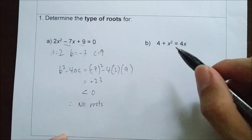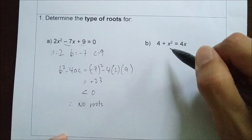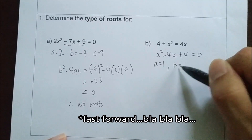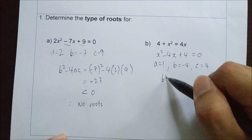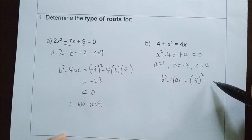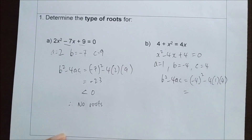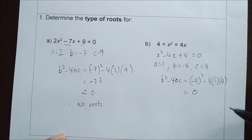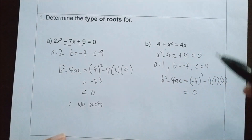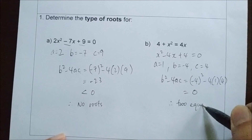How about this one? First, we rewrite this in general form. Now, b squared minus 4ac equals to negative 4 squared minus 4ac. If we calculate the values, we get 0, meaning that this given quadratic equation has two equal roots.